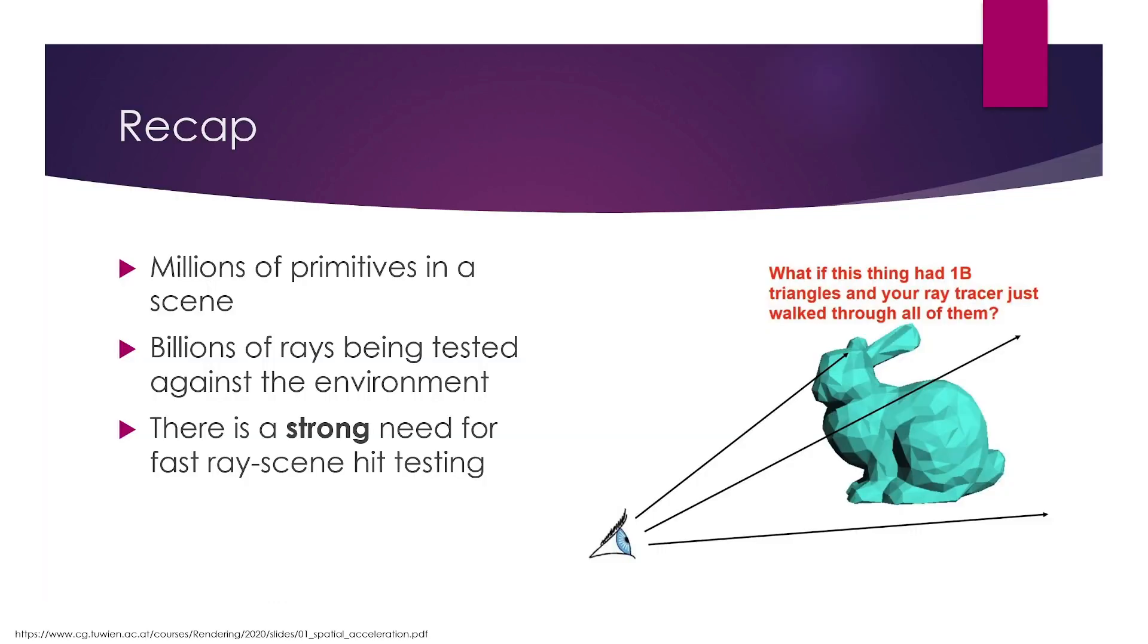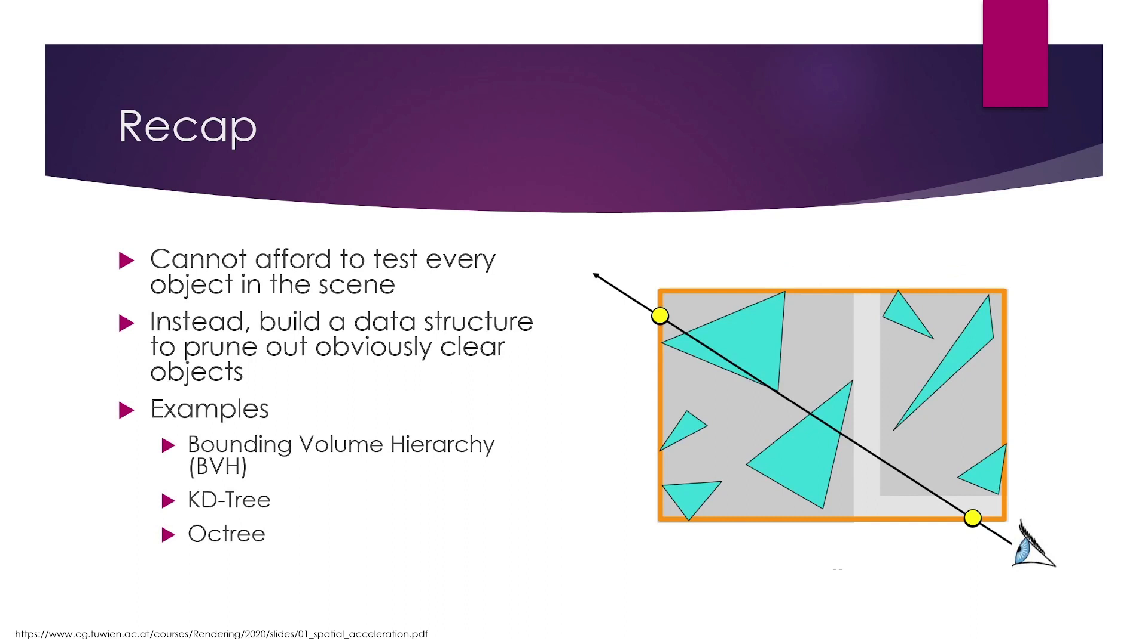Just as a recap, in case anyone has forgotten, there might be millions of primitives in a scene and billions of rays being tested against this environment. So there is a strong need for really fast ray scene hit testing. We clearly cannot afford to test every object in the scene, so we'll build a data structure to prune out obviously clear objects.